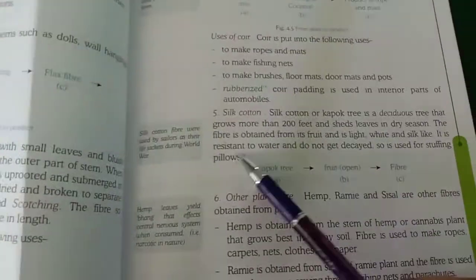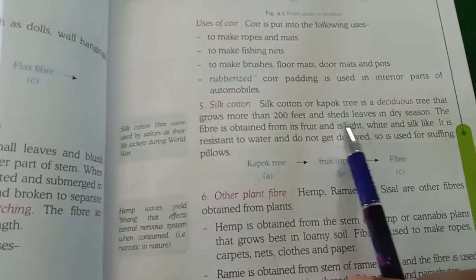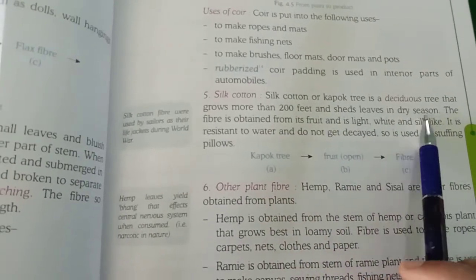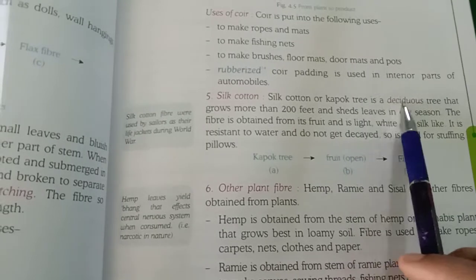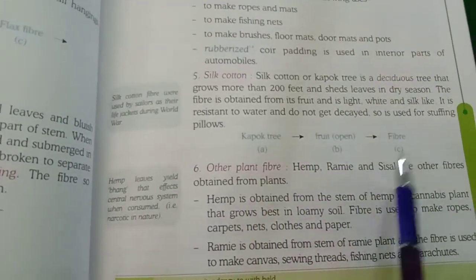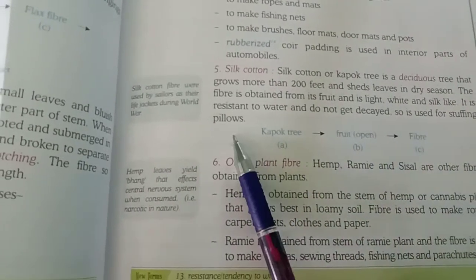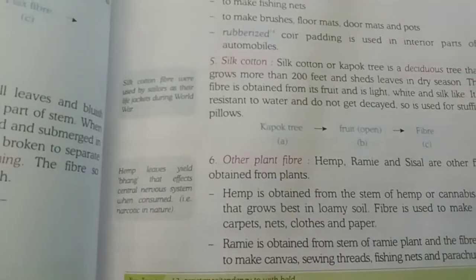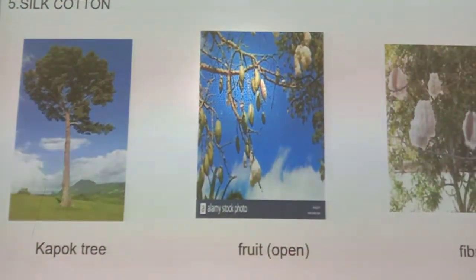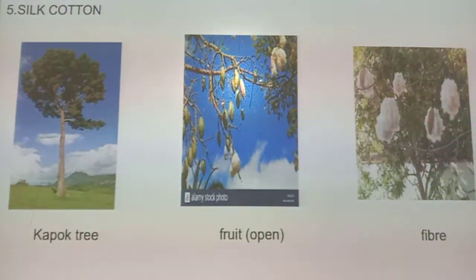Now come to silk cotton. We get silk cotton from the copac tree. Copac tree is a deciduous tree that grows more than 200 feet and seeds live in dry seasons. Deciduous means the tree grows mainly in autumn season. When the copac tree fruits open, we get the fiber, and these fibers are mainly used to make pillows. Here is the picture — first the copac tree, then the fruit opens, then we get the fiber. So its name is silk cotton.